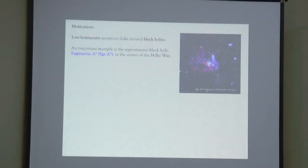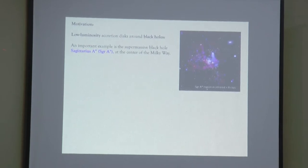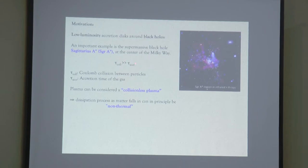Perhaps the best studied case is Sagittarius A star. One reason we use this system is because one can estimate the collision time between particles and find that it could be much larger than the accretion time of the system.